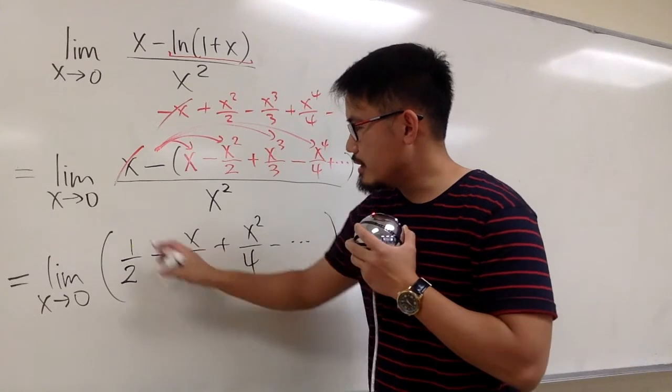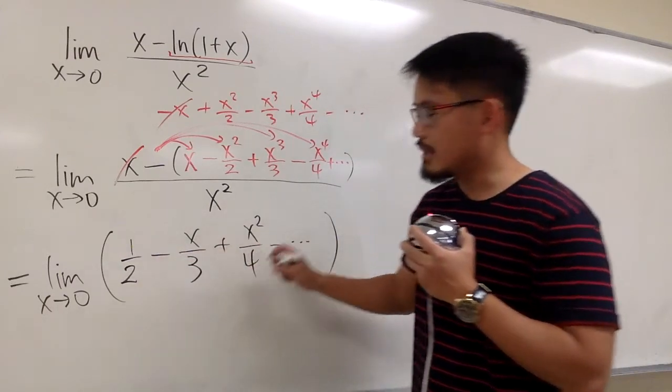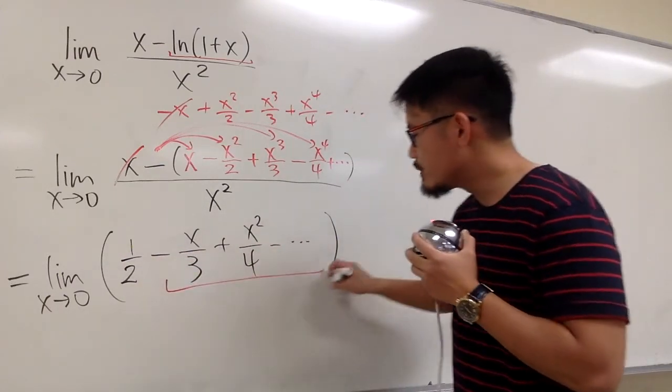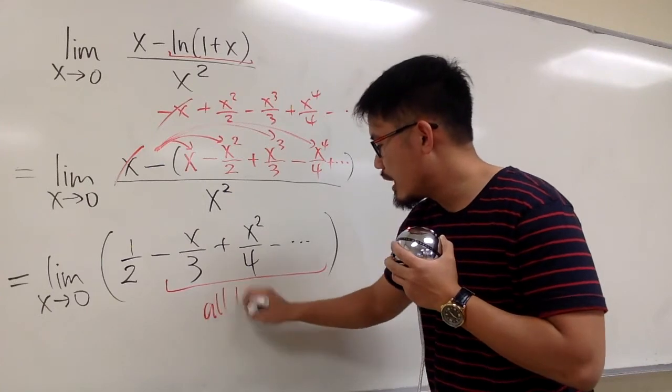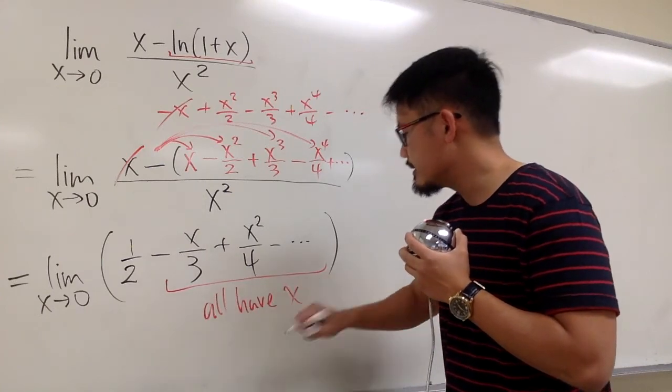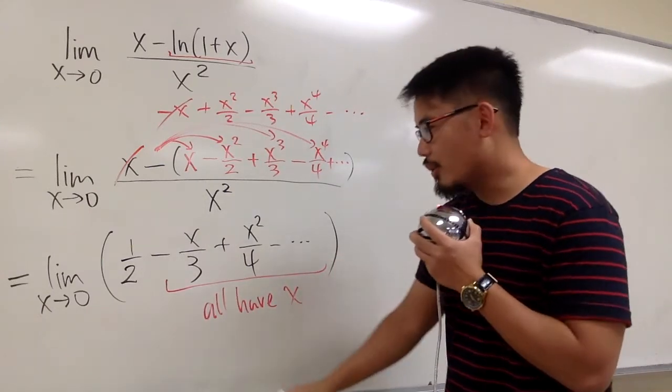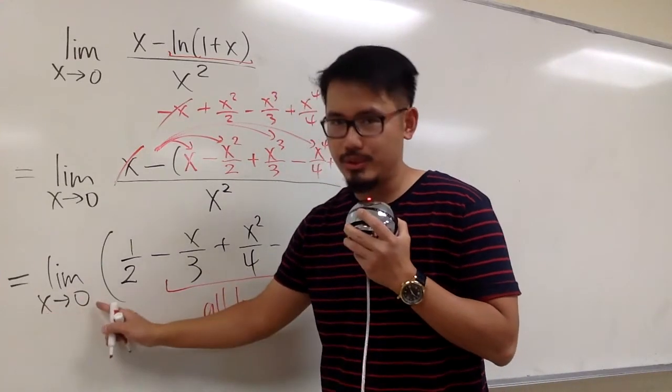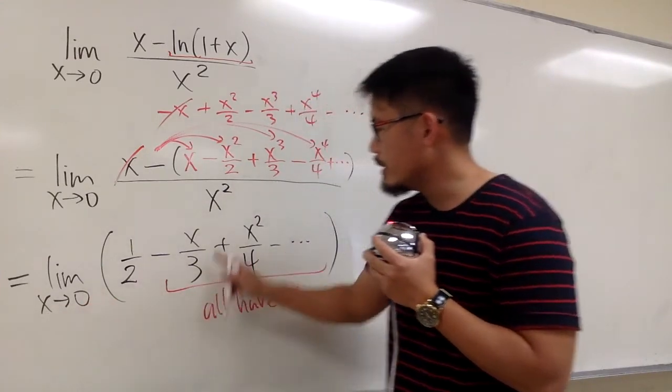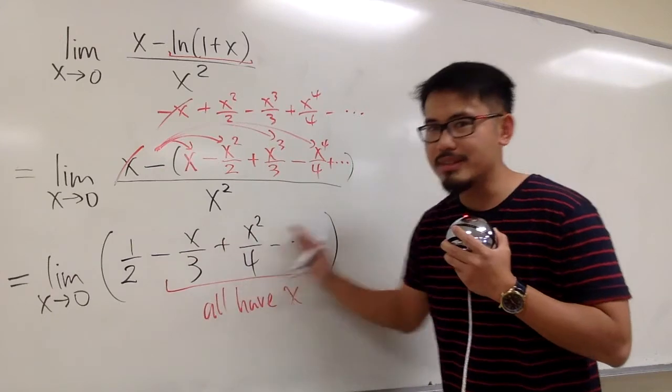So inside these parentheses, we have 1/2 and then minus, plus, whatever, but all of this has x in it. So when x is approaching 0, once we plug in 0 into all these terms here, all of this will become 0.